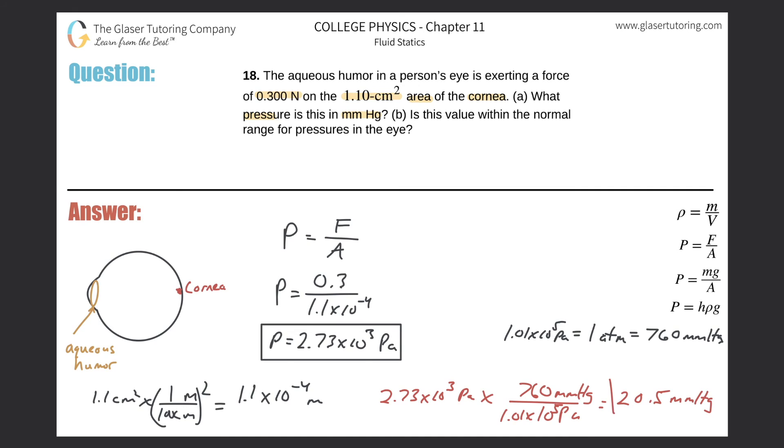Let's take a look at letter b. It says: Is this value within the normal range for pressures in the eye? I don't know—what do I look like, a doctor? I have no idea. Is it within the normal range? What is the pressure in the eye? I have no idea.